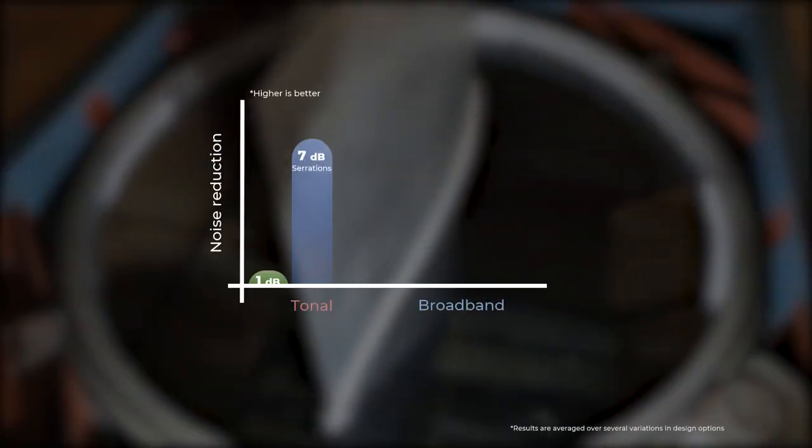For example, we also tested serrations that were made out of porous material, and to our surprise, the noise reduction was actually improved. Compared to regular serrations, the tonal noise reduction of this modified serration is about the same, but the broadband noise reduction has been increased by a couple of decibels. However, we still need more studies to better understand how different properties of a porous material can affect its noise reduction capabilities.